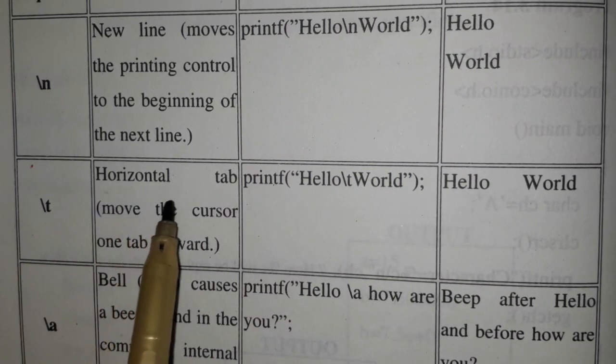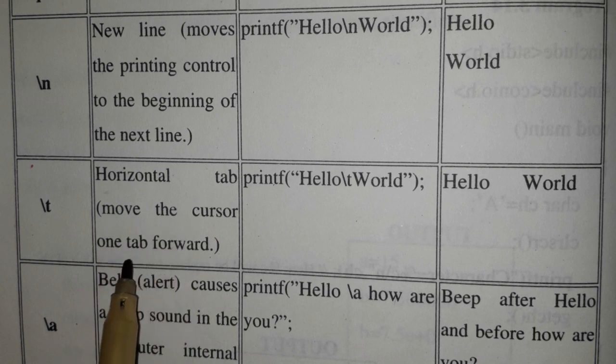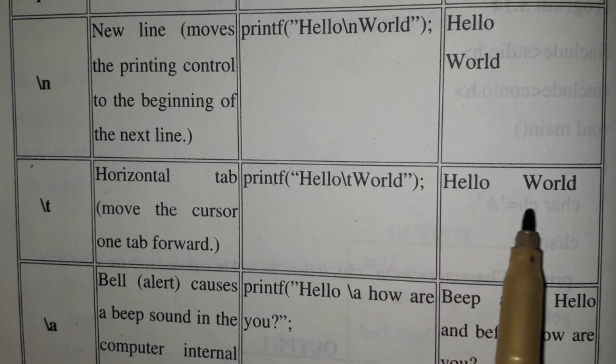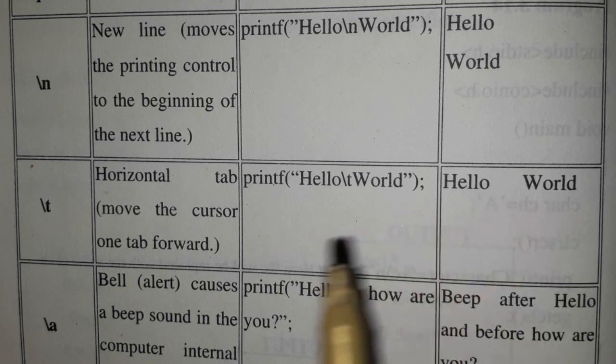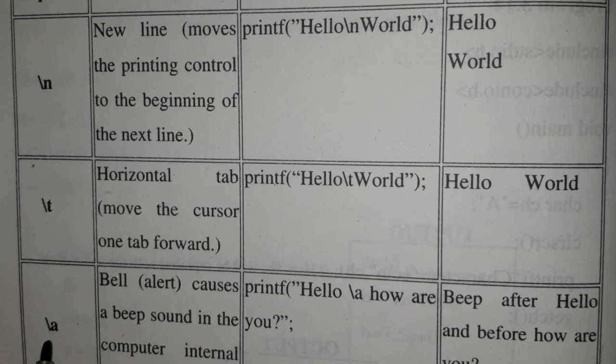Backslash t is used to insert five tabs, five spaces. Tab means five spaces. Hello backslash t world - so five spaces are added between hello and world.